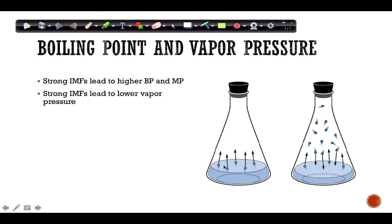Vapor pressure refers to what happens in an enclosed container of liquid: molecules inside the liquid can escape into the space above it. With strong IMFs, molecules stick together and stay in the liquid, so fewer molecules escape into the gas phase, resulting in lower pressure. With weaker IMFs, more molecules escape into the gas, hit the walls of the container, and create higher pressure.